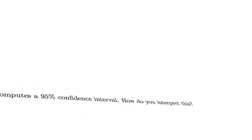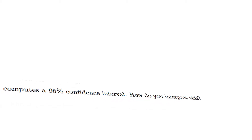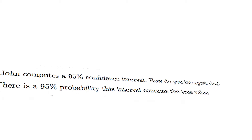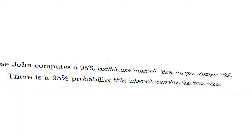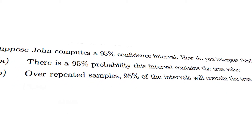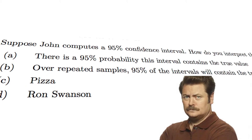Consider a possible exam question: suppose John computes a 95% confidence interval — how do you interpret this? Option A: there is a 95% probability this interval contains the true value. Option B: over repeated samples, 95% of the time the interval will contain the true parameter. The correct answer is B. Why isn't saying 'there's a 95% chance it contains the true value' the same as saying 'over repeated samples 95% of the time it contains the true parameter'? That's a nuanced and technical distinction — see the link in the description for more.